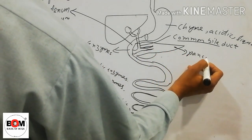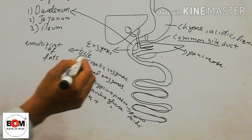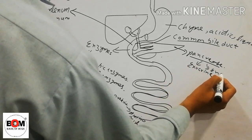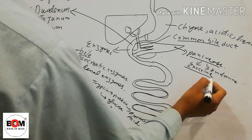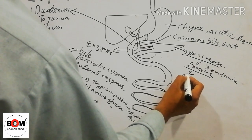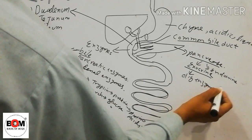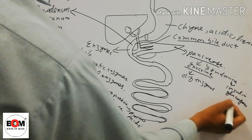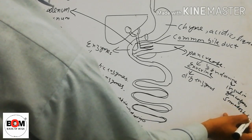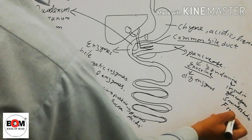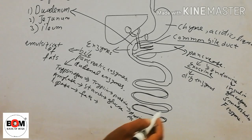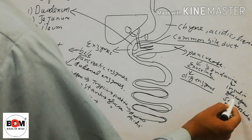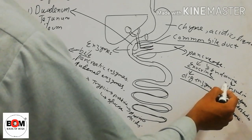The pancreas has two functions: exocrine and endocrine. The exocrine function is the release of digestive enzymes, while the endocrine function is the release of insulin, glucagon, somatostatin, and pancreatic polypeptide. In the digestive system, the exocrine function helps in the digestion of food, while insulin and glucagon have a role in the endocrine system.